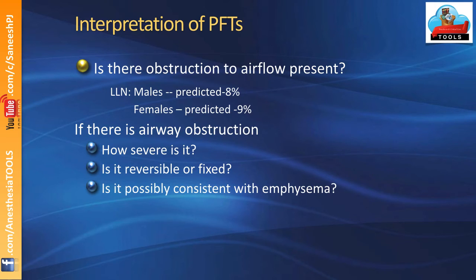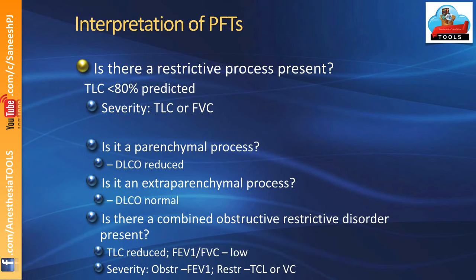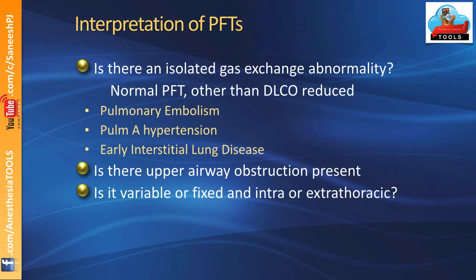After grading severity, assess reversibility — whether it responds to bronchodilators or is consistent with emphysematous change. Reversibility is indicated by an improvement of 12 percent or 200 mL in FEV1, or a 15 percent or 200 mL improvement in FVC after bronchodilator. A positive bronchodilator response strongly confirms bronchial asthma. However, lack of lab responsiveness does not preclude success in a clinical trial of bronchodilator therapy — always give the benefit of the doubt to the patient. For restrictive processes, severity is graded by TLC or FVC. If PFT values are normal but only DLCO is reduced, suspect extra-parenchymal issues like pulmonary embolism, pulmonary artery hypertension, or early interstitial lung disease.